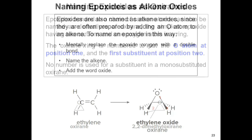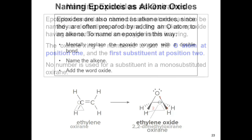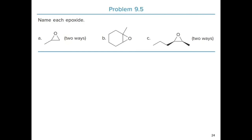Epoxides can also be named as alkene oxides, since they are often prepared by adding an oxygen atom to an alkene. To name this way, mentally replace the oxygen with a double bond — giving the alkene name — then add the word 'oxide.' For example, this becomes ethylene oxide.